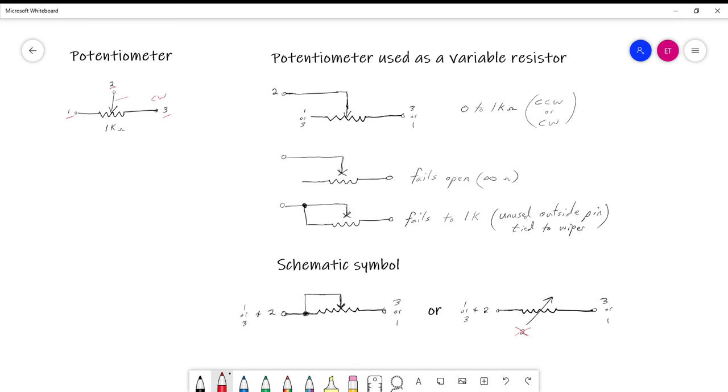...we can say pin one is the counterclockwise pin. Let's use those conventions and we'll explain how to use the potentiometer as a variable resistor. Later on we will look at how to use a potentiometer as a potentiometer, and in that case you would use all three pins and you would actually get a variable voltage out of that.